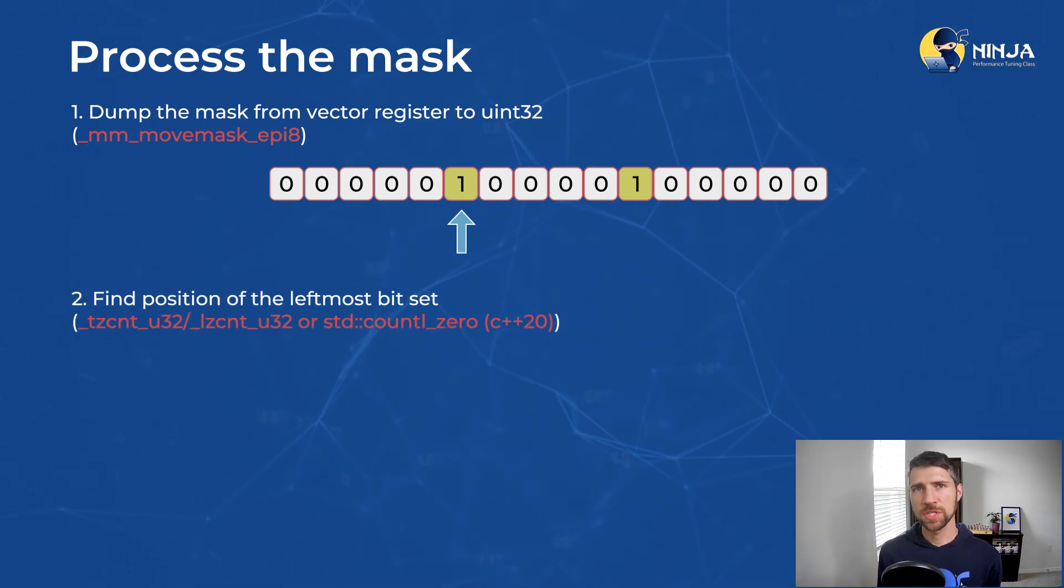And now we need to find the position of a leading set bit in that number and we can use the TZ count, which stands for trailing zero count or LZ count, which stands for leading zero count. Those are the x86 intrinsics. Since C++ 20, we also have this library function count leading zero, which on x86 does the right thing. It basically generates the same x86 instructions as those two compiler intrinsics.